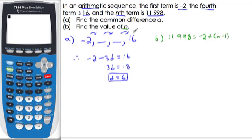Our goal is to find n, we don't know what it is yet, we're looking for the nth term, times d, the common difference, which we found in part (a) to be 6.